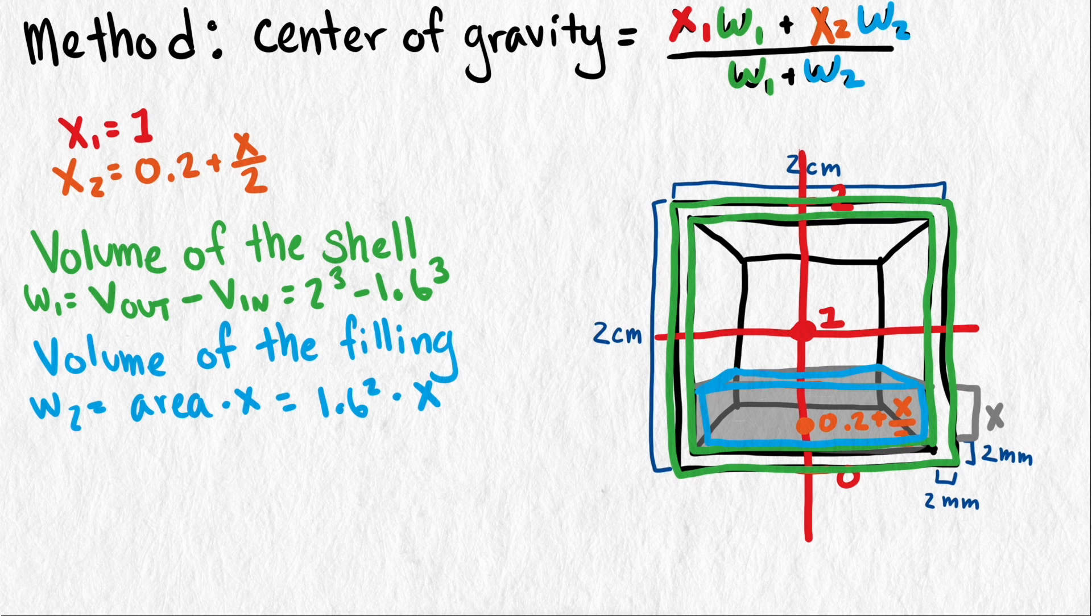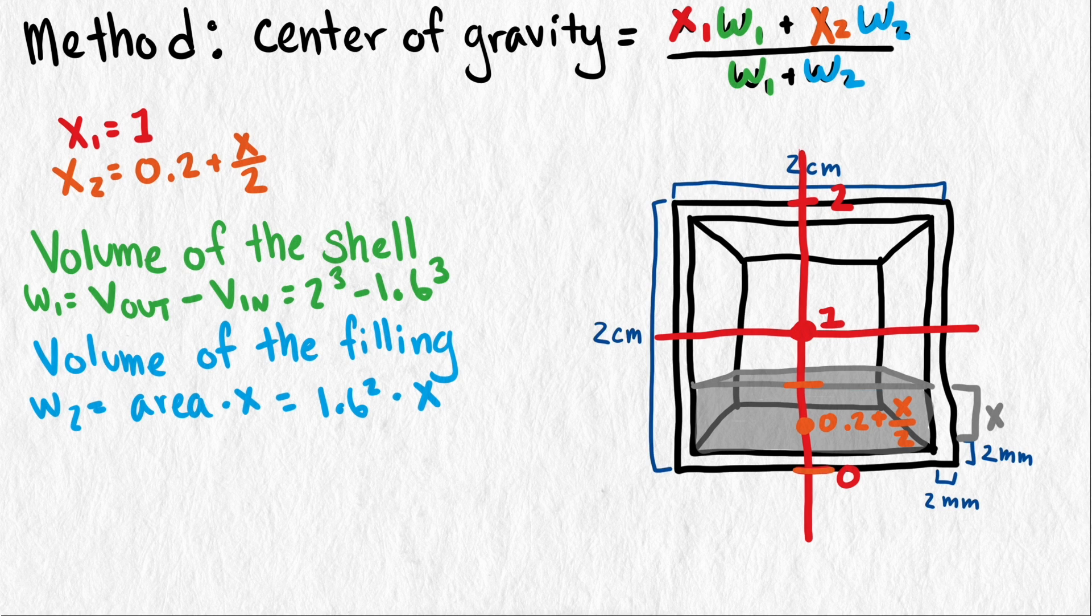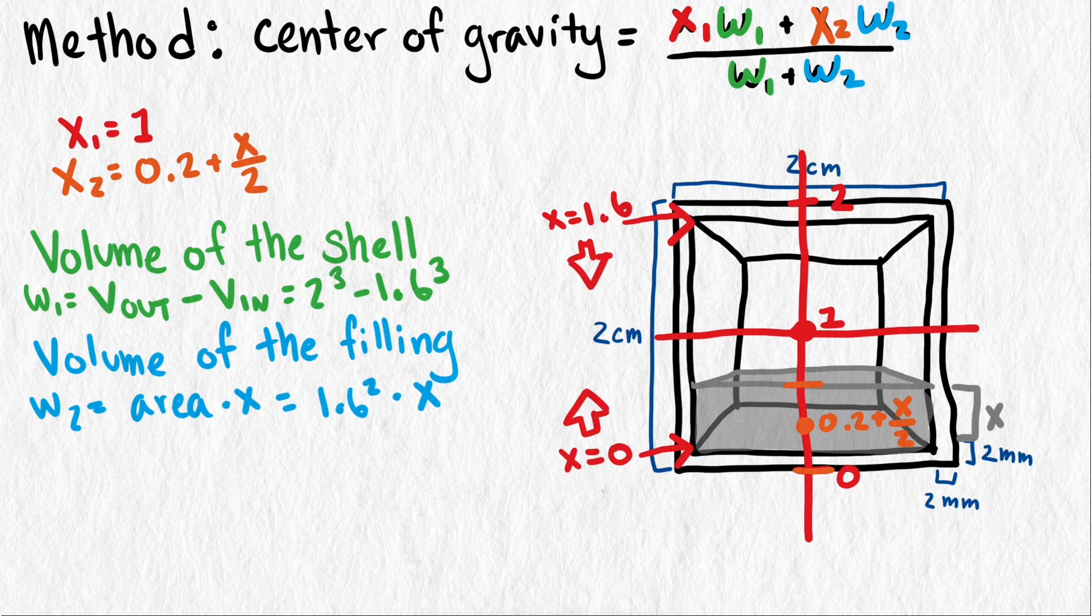Notice if x is 0, then we just have the shell with no filling, and the center of gravity will be 1, right in the middle. If we fill the entire cube, so x equals 1.6, then we also have a center of gravity of 1. So somewhere between these two extremes, we should find a minimum, which will tell us the lowest center of gravity.